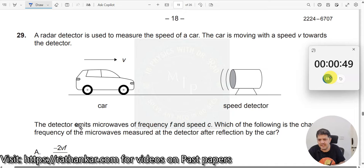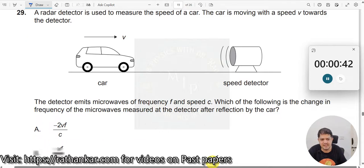It is moving towards it like this. The detector emits microwaves of frequency f and speed c. Which of the following is the change in frequency of the microwaves measured at the detector after reflection by the car?